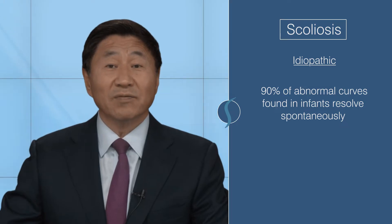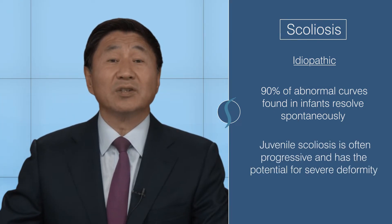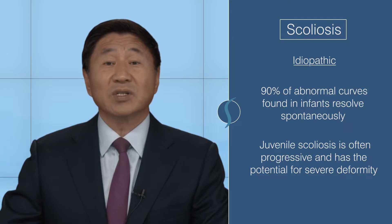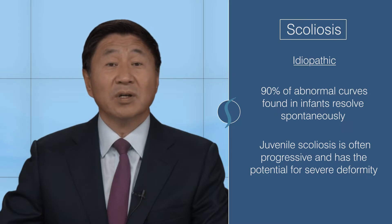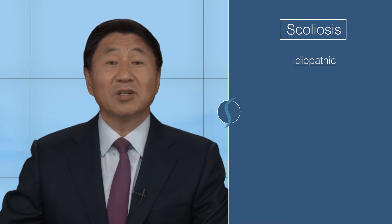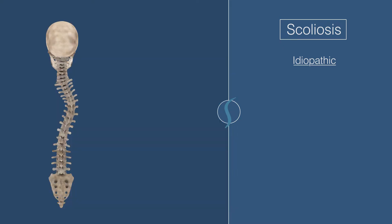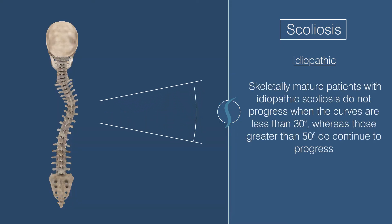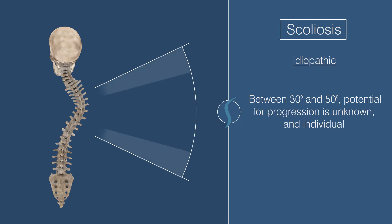Abnormal curves found in infants usually resolve spontaneously. But juvenile scoliosis is often progressive and has a potential for severe deformity with heart or lung issues. Studies show that skeletally mature patients with idiopathic scoliosis do not progress when the curves are less than 30 degrees, whereas those greater than 50 degrees do continue to progress. Between 30 and 50, the potential for progression is unknown and individual.